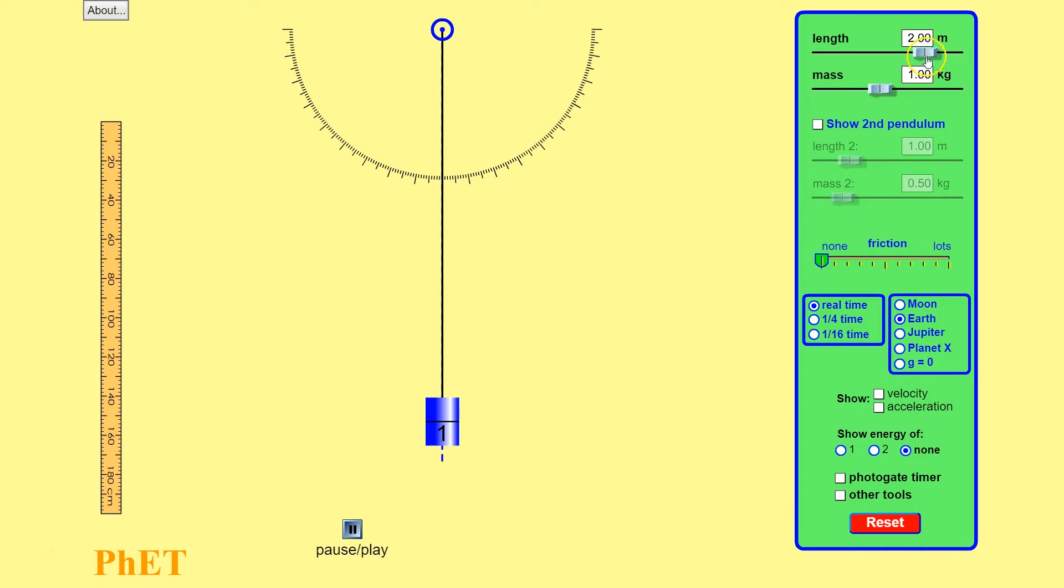In the simulator, we can manipulate our length, mass, and amplitude—our three independent variables.